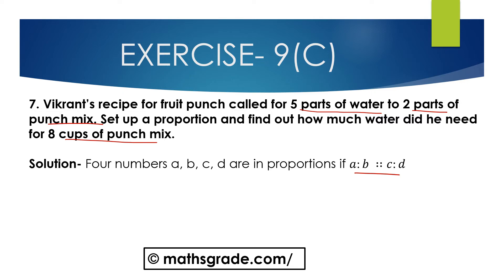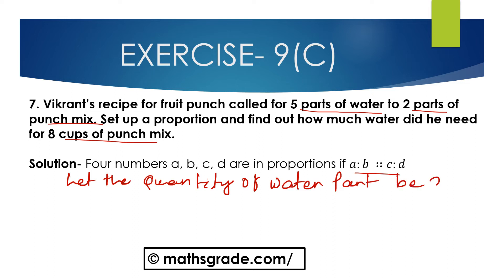Here, 5 parts of water to 2 parts of punch mix. We set up the proportion: 5 divided by 2 is equal to x divided by 8. We have to convert 5 divided by 2 into an equivalent ratio where the consequent equals 8. So the second ratio's consequent is 8.